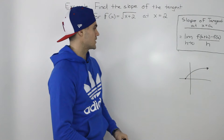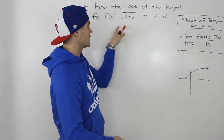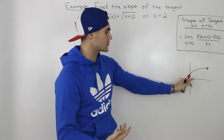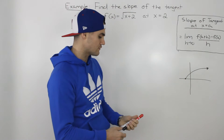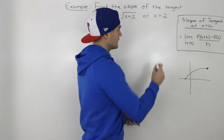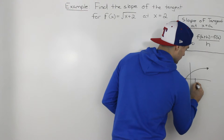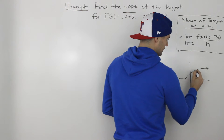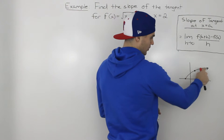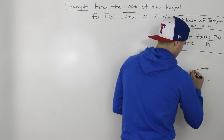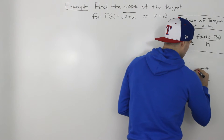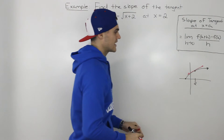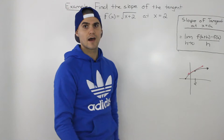Before getting into the algebra for this question, let's show it visually. I took this function, the square root of x plus 2, and graphed it here. It's basically the square root function shifted over by 2 to the left. We have to find the slope of the tangent at an x value of 2 — the tangent is the line that just hits this point on the function and no other point. So we have to find the slope of that red line.